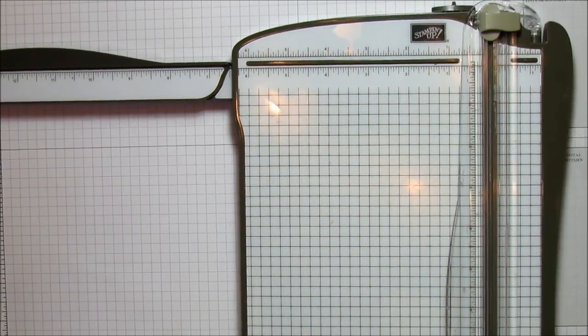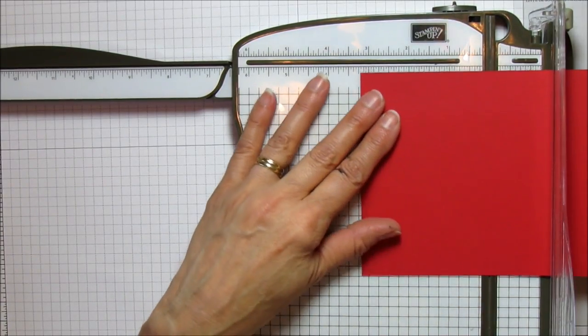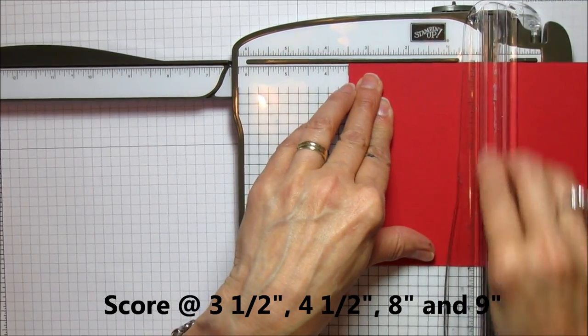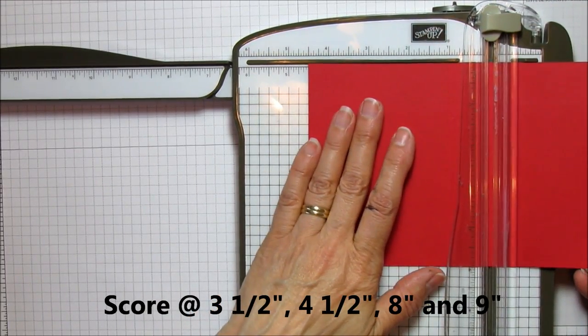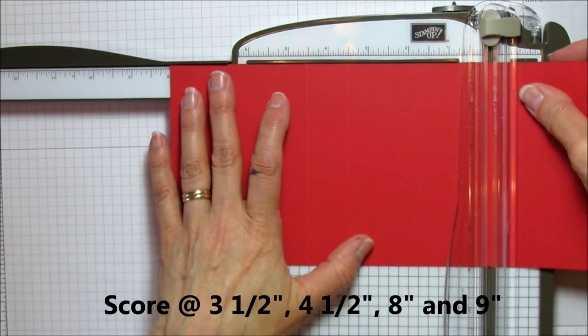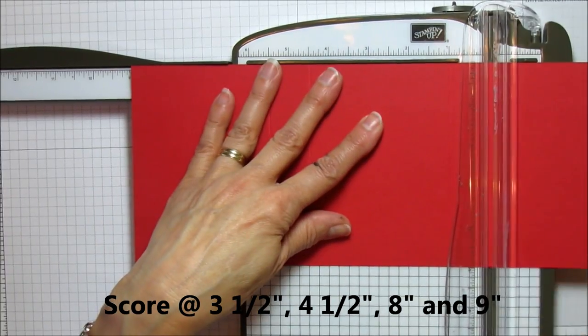Let me get the trimmer out. The first thing we'll do is score on the long side at 3.5, then at 4.5, at 8, and then at 9. That's it on that side.